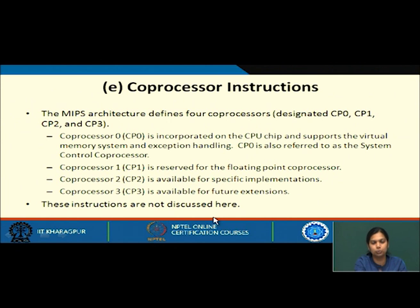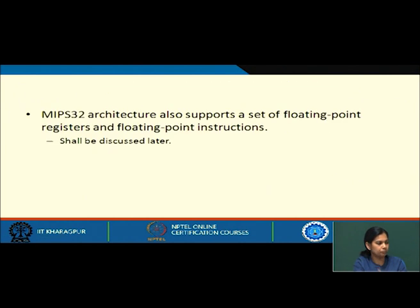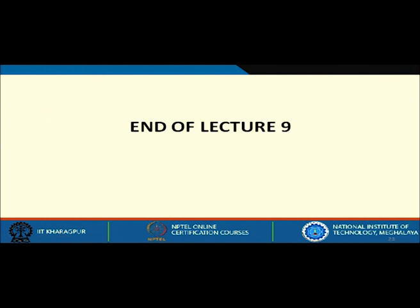We do not know what kind of coprocessor will be needed in the near future, so some coprocessor slots are reserved for future use — those instructions are not discussed here. MIPS architecture also supports a set of floating point registers and floating point instructions, which shall be discussed later. This concludes lecture 9, where we discussed the various kinds of instructions in MIPS 32 architecture. Thank you.